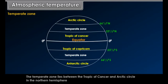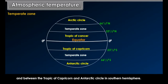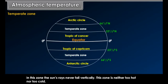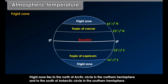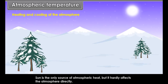Our Earth has no light and heat of its own. It receives heat from the sun. The surface temperature of the sun is estimated to be 6000 degrees Celsius. The sun continuously radiates its energy, known as solar radiation. On the basis of heat received by the Earth, we may divide the Earth into the following heat zones: torrid zone, temperate zone, and frigid zone. The torrid zone lies between the Tropic of Cancer and Tropic of Capricorn on both sides of the equator. Here, the sun's rays are almost vertical throughout the year. This zone receives maximum heat and is the hottest zone of the Earth.